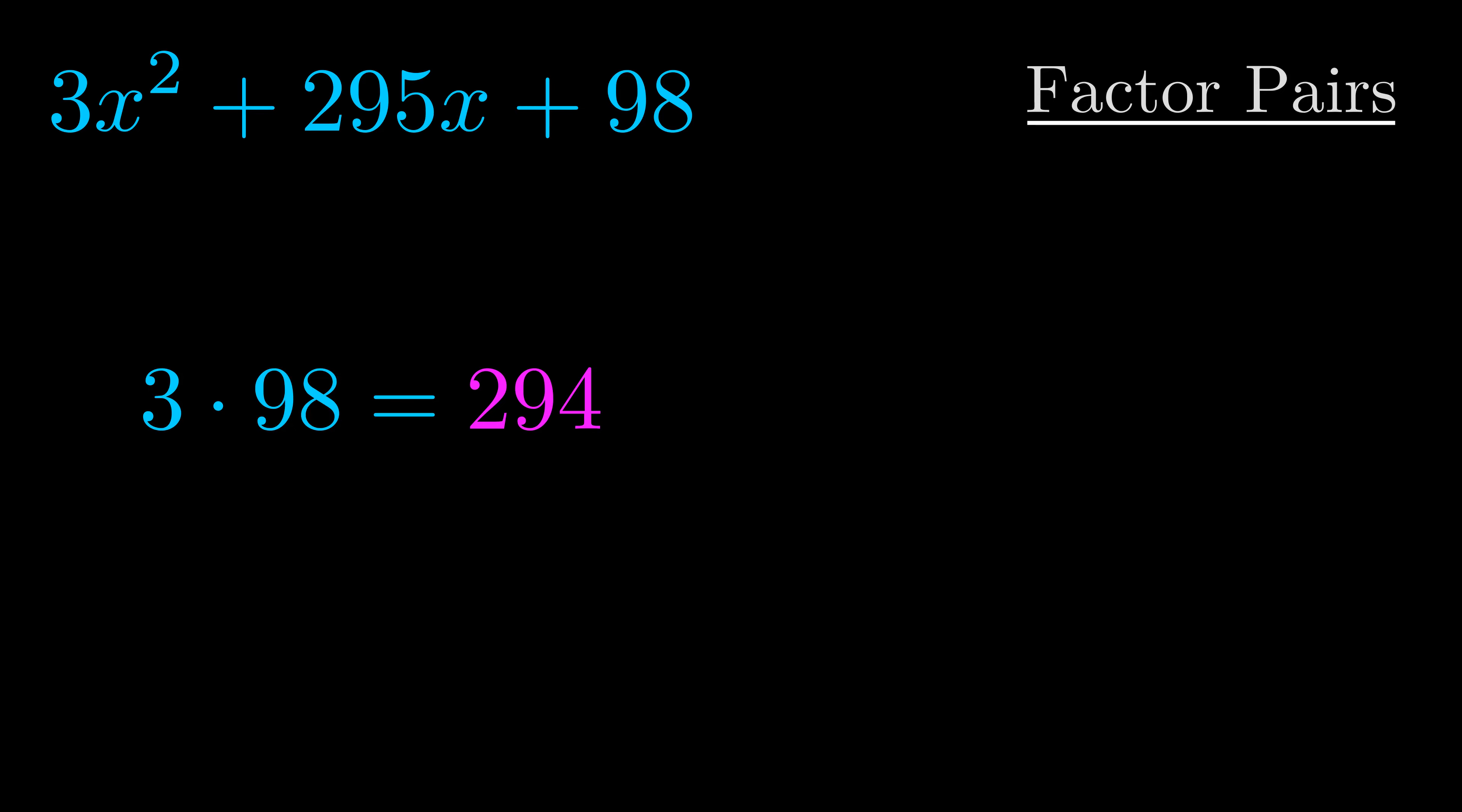Okay here's what I came up with. Now once you have these factor pairs the goal is to find which of these pairs adds to the b value.